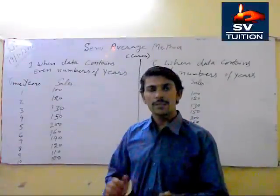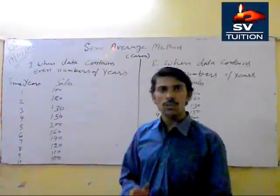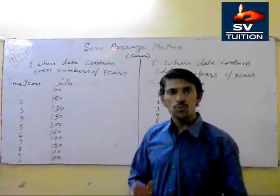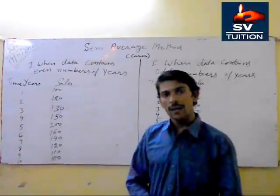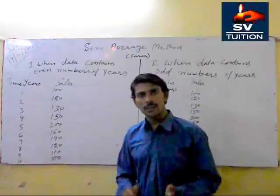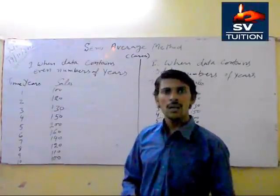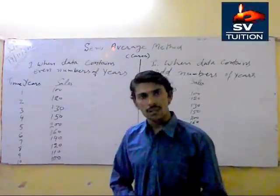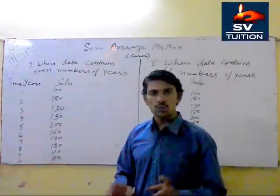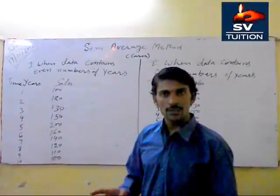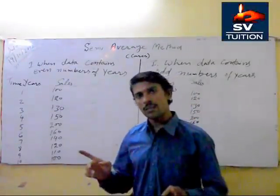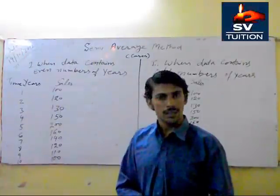In this method we divide total data into two parts, and then we take the average. The same data will show in the graph paper by joining two points of average and then we see the trend line.